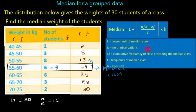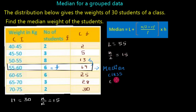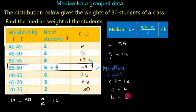To recap: L is the lower limit of the median class, N is the number of observations, Cf is the cumulative frequency of the class preceding the median class, F is the frequency of the median class, and H is the class size. For the given data, L is 55, N by 2 is 15, Cf is 13, F is 6, and H is 5, since the class intervals 40 to 45, 45 to 50, 50 to 55, and so on each have a size of 5.